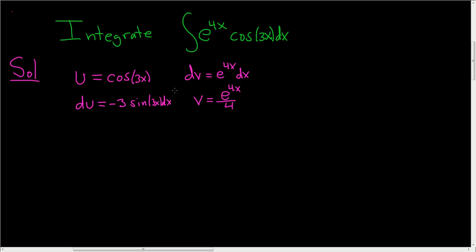All right, now let's use the formula. So I'm going to call this I. So I is equal to, and there's a reason for this you'll see later, this is uv. So it's going to be one fourth e to the 4x, that's v, and then we have u here, so cosine of 3x.